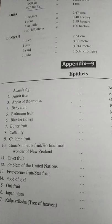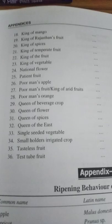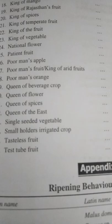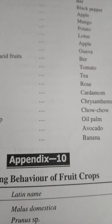China's miracle, horticulture wonder of New Zealand, it is kiwi fruit. The answer to the question: test stew fruit is banana. Please remember it. Tasteless fruit is avocado, small hold irrigated crop is oil palm, and poor man's fruit or king of arid fruit is ber.